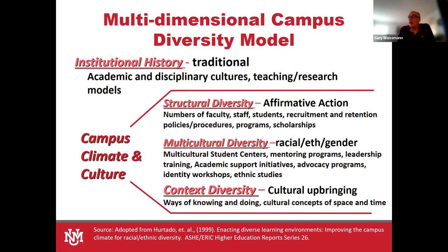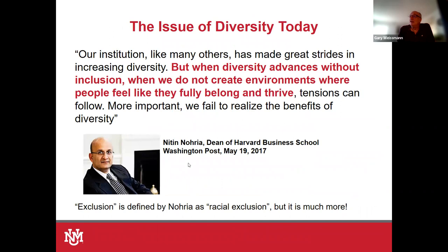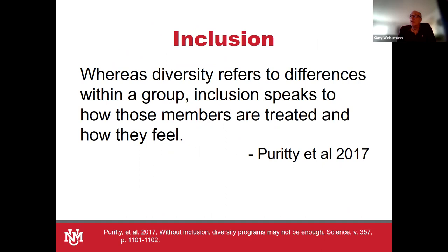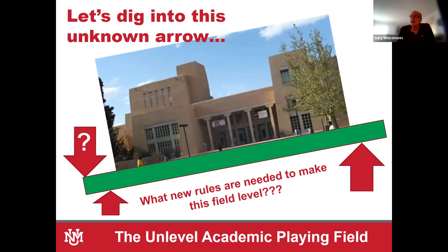When we look at a campus and different models, there's the institutional history — what the academic and disciplinary cultures are and what teaching models are used. In broad terms there's structural diversity, that's counting numbers and head counts — affirmative action was used to try to address structural diversity. There's multicultural diversity, which is celebrating different cultures and having their places on campus. And then there's context diversity — what I'm presenting today — which goes down to the core of ways of knowing and doing that are culturally developed. As one of my colleagues, Alicia Chavez, says: basically stuff you learned before you're five years old. The dean of Harvard Business School noted that when diversity advances without inclusion, when we don't create environments where people feel like they belong and thrive, tensions follow — and we fail to realize the benefits of diversity.